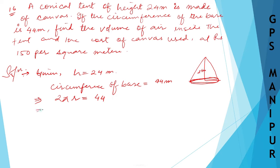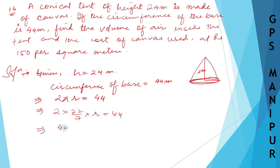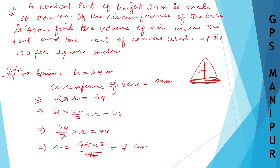Let me calculate r. The formula for circumference is 2πr, so 2 × (22/7) × r = 44. This gives (44/7) × r = 44, so r = 44 × 7 / 44 = 7. So the radius is 7 meters.